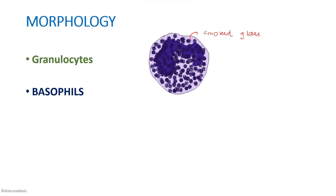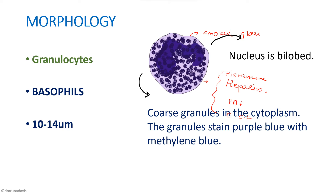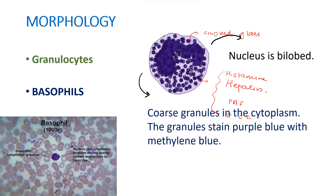The granule constituents of basophils include histamine, heparin, platelet activating factors, and eosinophil chemotactic factors. The size is similar to that of the neutrophil, around 10 to 14 micrometers. In the peripheral smear, basophils appear almost completely bluish and you cannot clearly appreciate the nucleus.